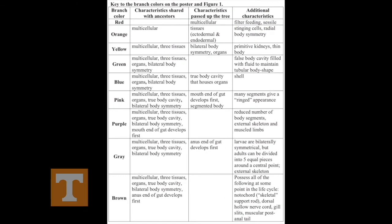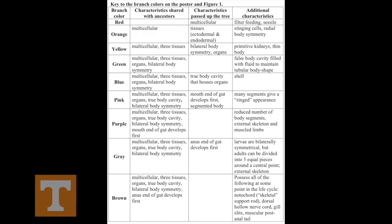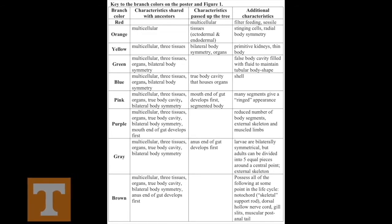There is a provided key to the tree on the previous page. Each color represents a set of characteristics that an animal must possess in order to fit on that branch. Use this key to help place your animals on the appropriate branch.